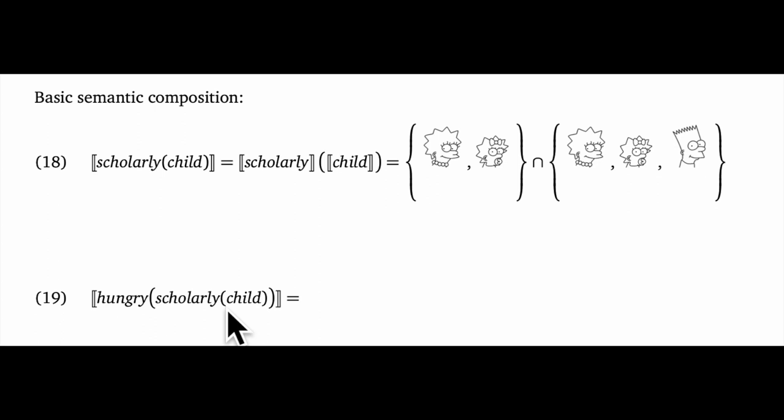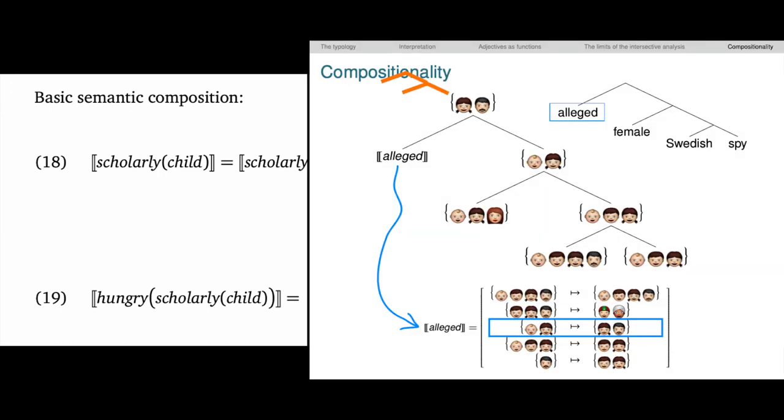That reveals some imprecision in my earlier formulation. Adjectives do combine with noun meanings to produce new noun meanings, but they can also do that with modified noun meanings. And this is how we can interpret an infinite number of trees in this way. The outputs and inputs match in terms of their semantic types, so we can just keep on modifying.